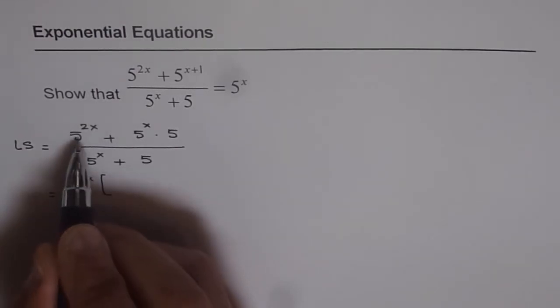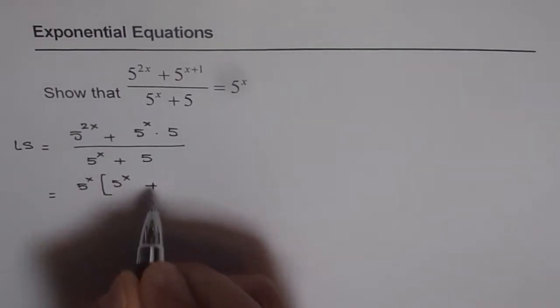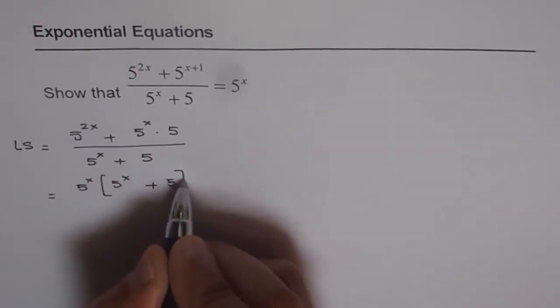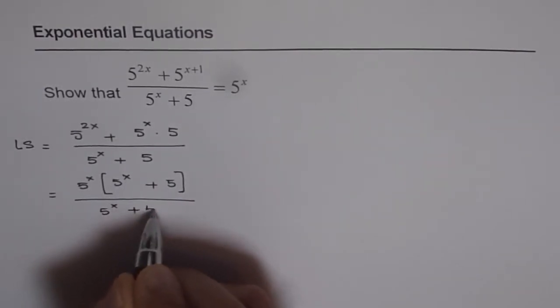We are left with 5 to the power of x from the first term plus 5 from the next term. And in the denominator we have 5 to the power of x plus 5.